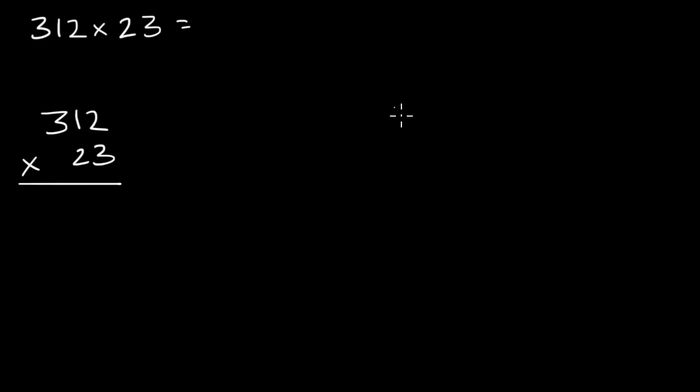And then here on the right, we're going to do what's known as partial products. And actually we're gonna do a few partial products even in the standard way. But over here, let me just write it 312 times 23. Now either technique, what we're going to think about is breaking up these numbers and multiplying each of the components times each other.